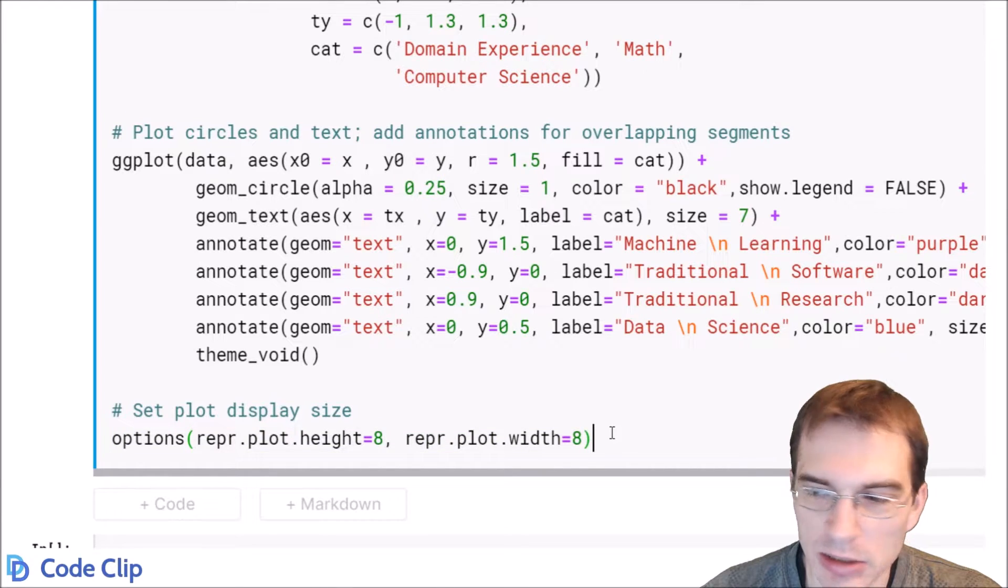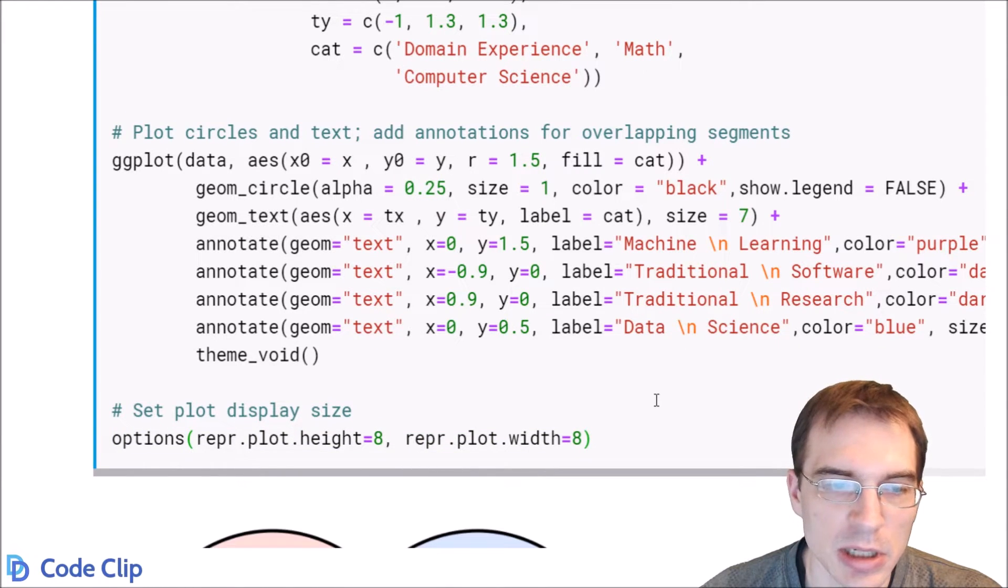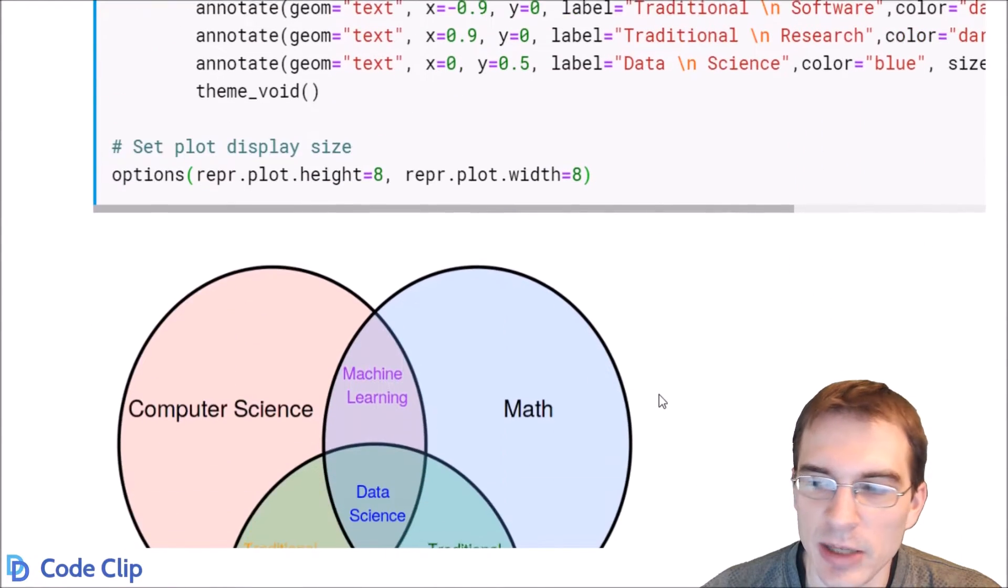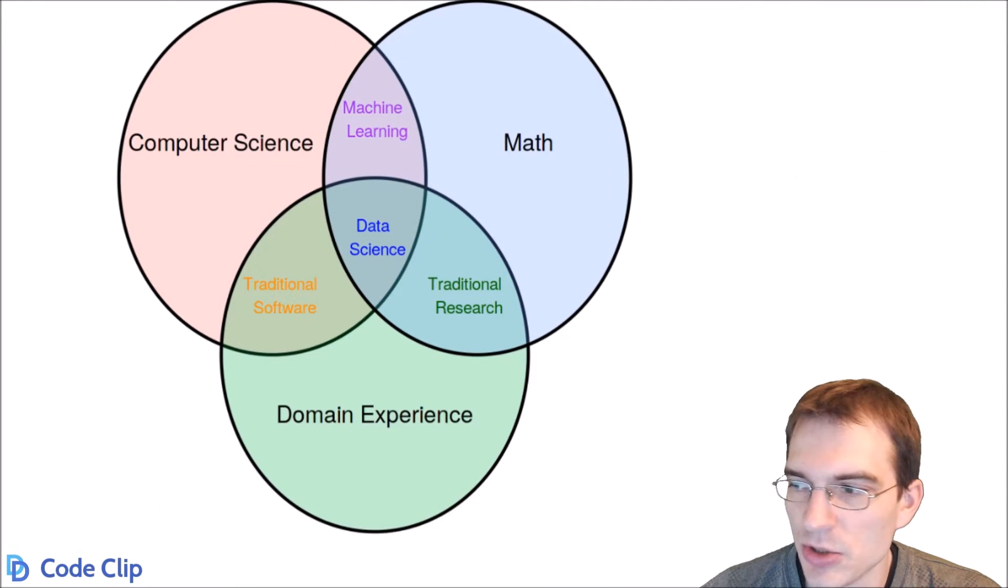We'll set a plot size, and let's run this and see what the result is. We're trying to construct a Venn diagram that's similar to one you may have seen before on the intersection of various data science skills.